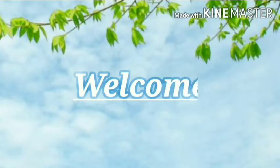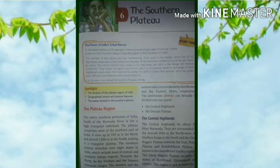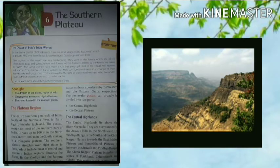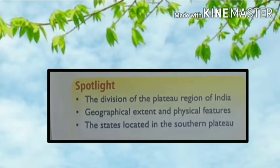A warm welcome to all the students. Today we are going to learn one more chapter of social studies and the name of this chapter is 'The Southern Plateau.' Do you know what the word 'plateau' means? A plateau is a landform which is higher than the plain but flat at the top, and they are also called 'table land' because they look like a table.